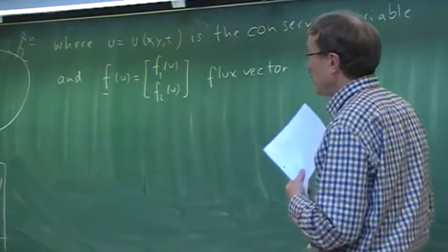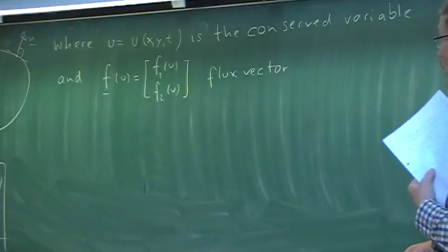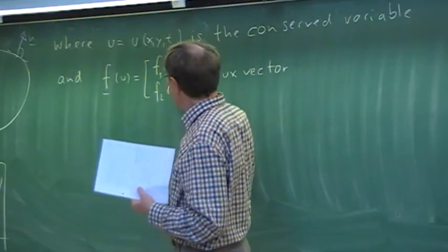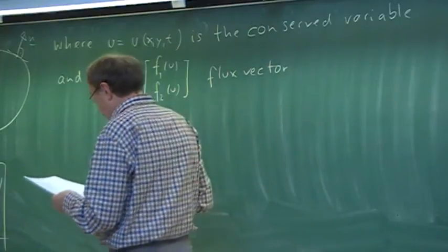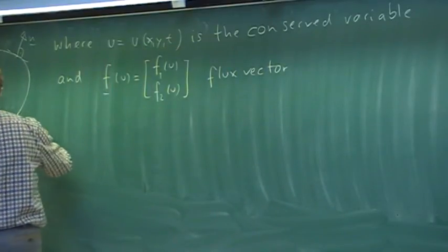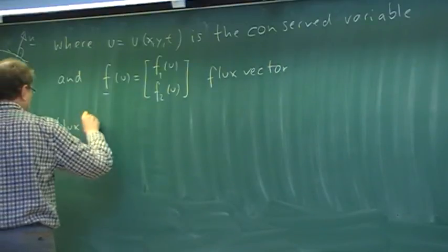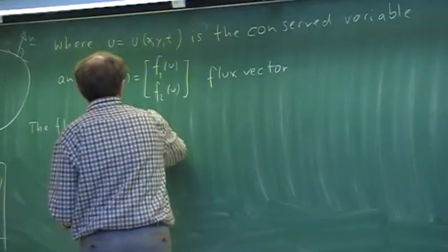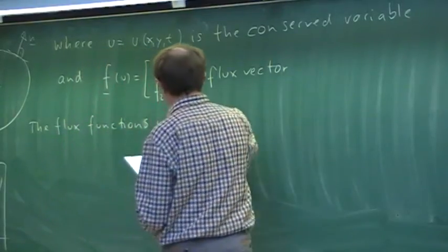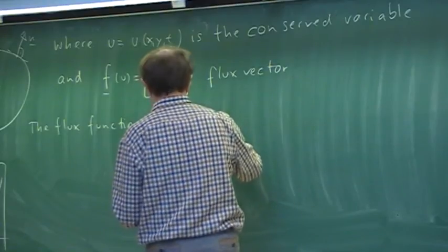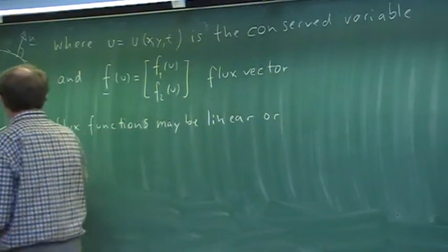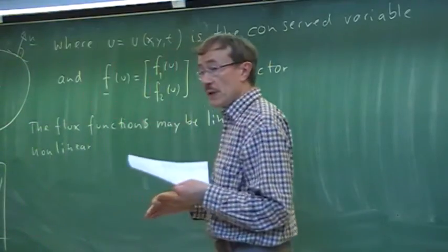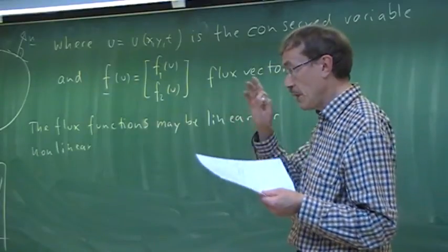If we take the continuity equation example, the flux components would simply be u and v — the velocity components — while u here is the density. The flux functions f1 and f2 of u may be linear or nonlinear. If they are both linear, we essentially have the linear advection equation in two dimensions. We will come back to that later.